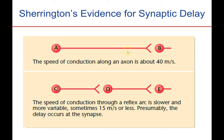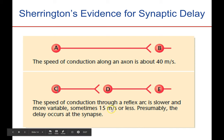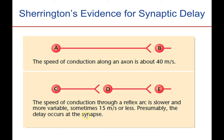For example, the speed of conduction along an axon can vary greatly, but in general it's about 40 meters per second. Sherrington measured the time it took from when he would pinch the dog's foot to when the muscle would contract, measured the distance of the reflex arc from the pain receptor up through the spinal cord and down to the muscle, and found the signal traveled at much less than 40 meters per second. The speed of conduction through a reflex arc was more like 15 meters per second because there were synapses interposed along the pathway, and Sherrington correctly inferred that the delay occurred at the synapses.